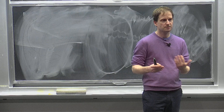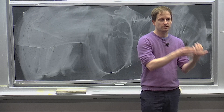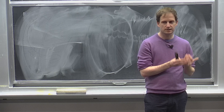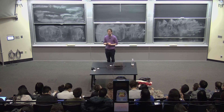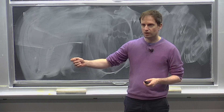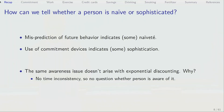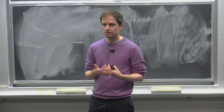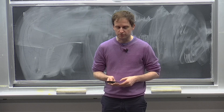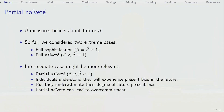The sophistication-versus-naivete issue does not arise with exponential discounting. There's no parameter that measures that in the exponential model. The whole issue only arises because of time inconsistency — the future self wants different things than the current self does. In the exponential discounting model, there's no such issue. The future self will always do what the current self actually wants to do unless circumstances change.